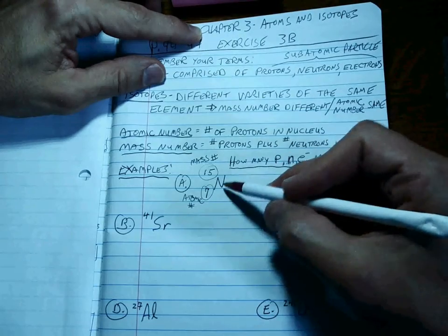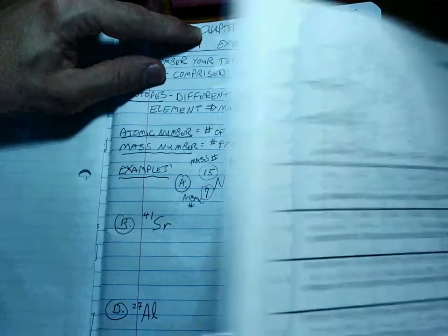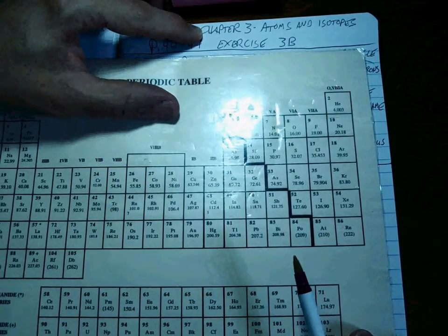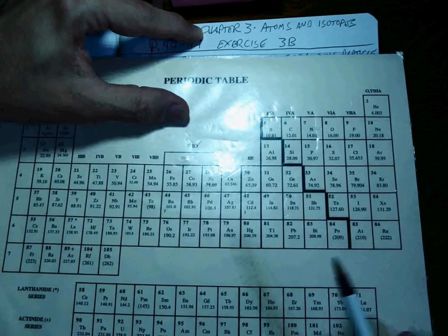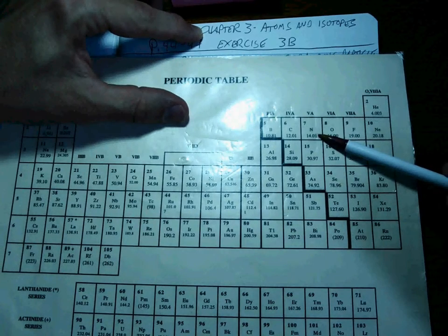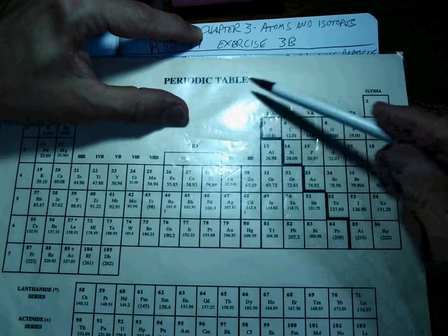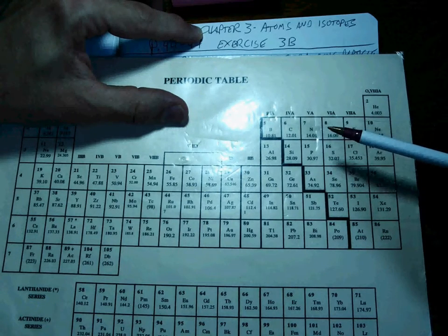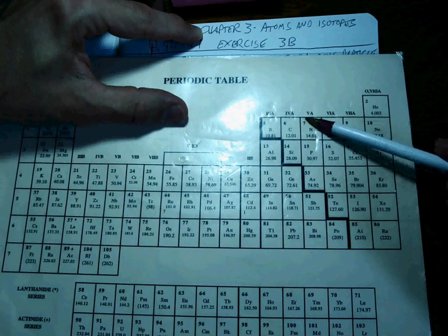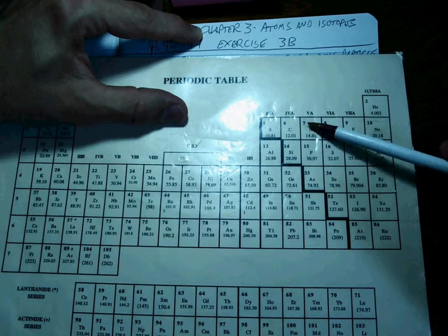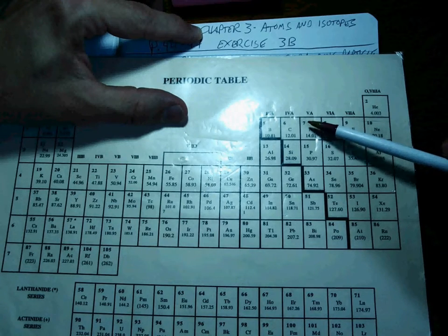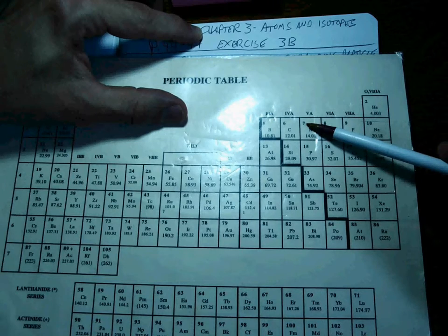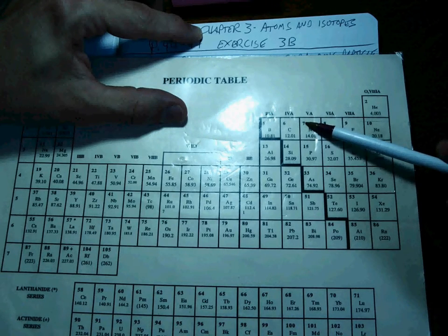Okay? So, nitrogen, if you look on the periodic table, there it is. So it's not bright. There we go. Nitrogen is right here. Notice that this is the periodic table of the elements, and doesn't mention specifically isotopes. So when you see this number up here, that's telling you that that's the atomic number. Nitrogen has seven protons. Anything that has seven protons is nitrogen.